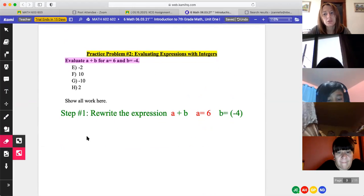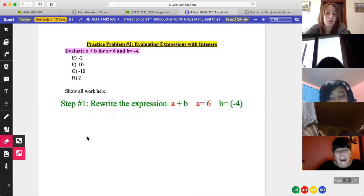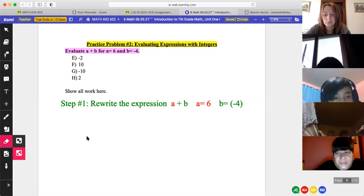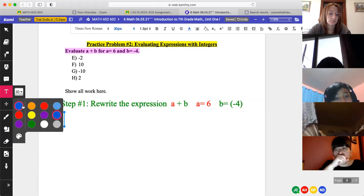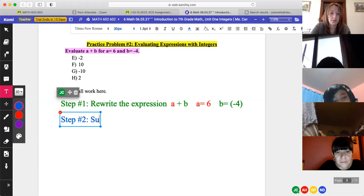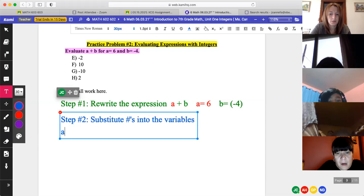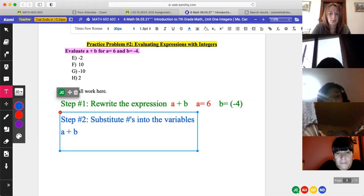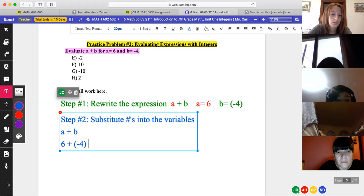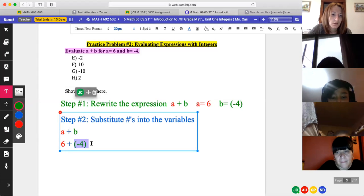Again, all you're responsible for today is these notes and I ready. That's all you have. Notes and I ready. Same exact thing on problem two. Kevin, you want to read it and try it? Evaluate what? Evaluate A plus B for A equals 6 and B equals negative 4.